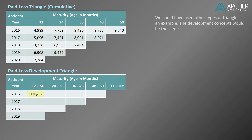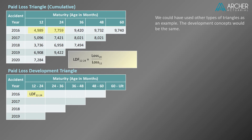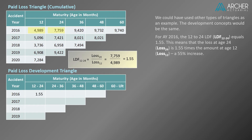Let's calculate our first loss development factor. I'm going to use the common abbreviation LDF going forward. For accident year 2016, the 12 to 24 LDF equals the ratio of paid losses at age 24 months to those at age 12 months — in other words, 7,759 divided by 4,989. This equals 1.55. Let's enter this LDF in the corresponding cell in our development triangle. For accident year 2016, the 12 to 24 LDF equals 1.55, meaning that the loss at age 24 is 1.55 times the amount at age 12, or a 55% increase.